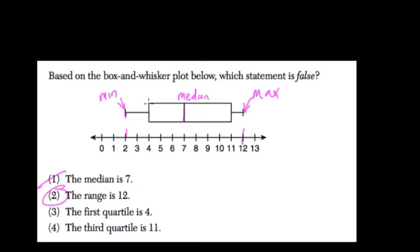The first quartile is 4. Well, this line is always the first quartile, and all that means is it's the value that separates your lower half of data into two equal groups, so that's true.